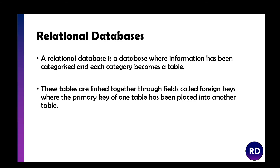A relational database is a database where information is categorised and each category becomes a table, so you might have one table for doctors and one for patients. These tables are linked together through fields called foreign keys. To recap: your primary key is your unique identifier for each record within a table.